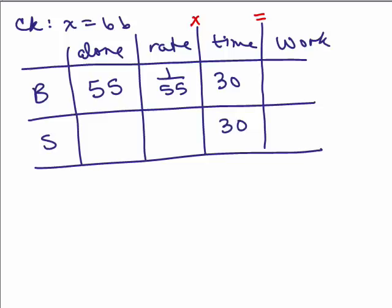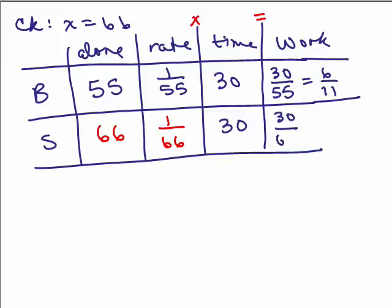So to check it we could just draw the chart again and put in what we knew. We knew Barry alone was 55 so his rate was 1 over 55 and the work was 30 and we had already figured out that was 6/11ths. Now x, we didn't know what x was, now we've got 66 so the son alone 66 so his rate is 1 over 66 so his work is 1/66 times 30 or 30 over 66 and if we reduce that by dividing by 6, we get 5/11ths.